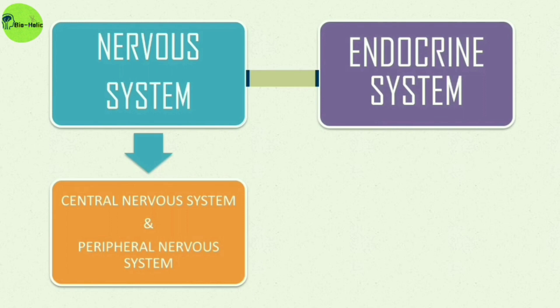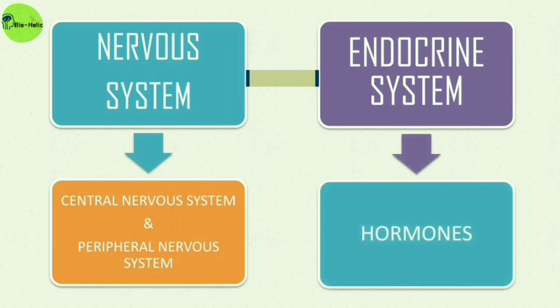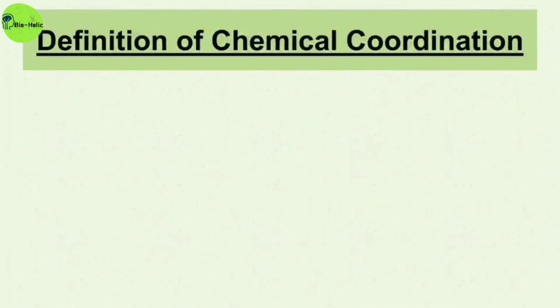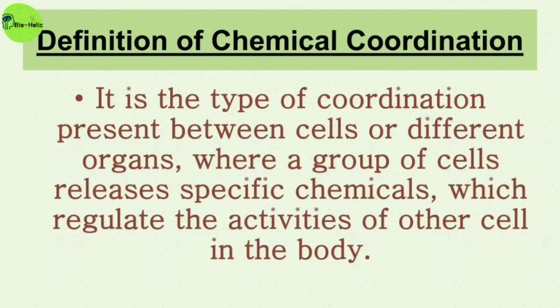Chemical coordination is under the control of the endocrine system, which includes various glands at various locations of the body. These glands are responsible for the secretion of hormones. Chemical coordination is the type of coordination present between cells or different organs where a group of cells releases specific chemicals like hormones, which regulate the activities of other cells in the body.